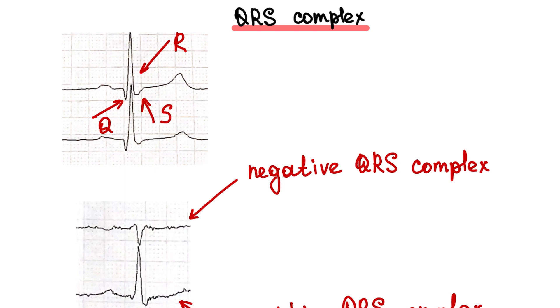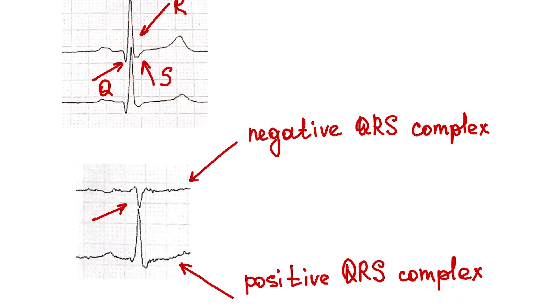S, negative wave after the R wave. What does a negative QRS complex mean? It means a dominant S wave, S is greater than R wave. What does a positive QRS complex mean? It means a dominant R wave, R is greater than S wave.